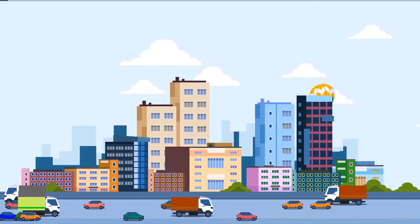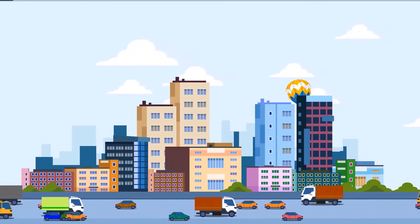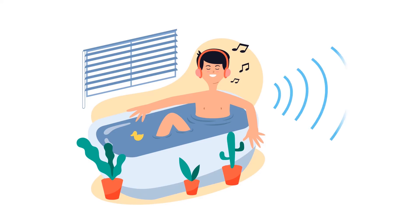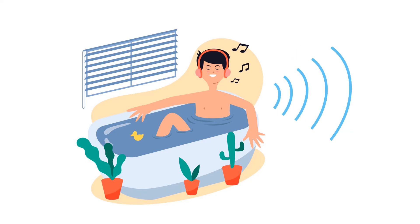Sound is part of our everyday sensory experience. Just as we have eyes for the detection of light and color, we are equipped with ears for the detection of sound. We seldom take the time to ponder the characteristics and behaviors of sound, and the mechanisms by which sounds are produced, propagated, and detected. The basis for an understanding of sound, music, and hearing is the physics of waves. Sound is a wave that is created by vibrating objects and propagated through a medium from one location to another. These vibrations create sound waves which move through a medium before reaching our ears.